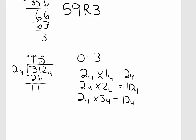So write 2. 2 base 4 times 2 base 4 is 10 base 4. Subtract — that's 1. Bring down the next number. How many times is 2 base 4 going into 12 base 4? That's 3. 3 base 4 times 2 base 4 is 12 base 4. Here we do not have a remainder.